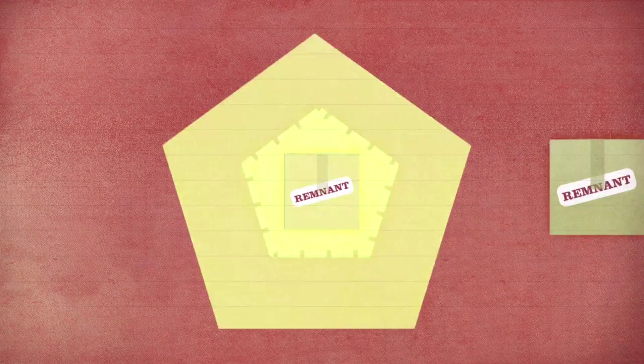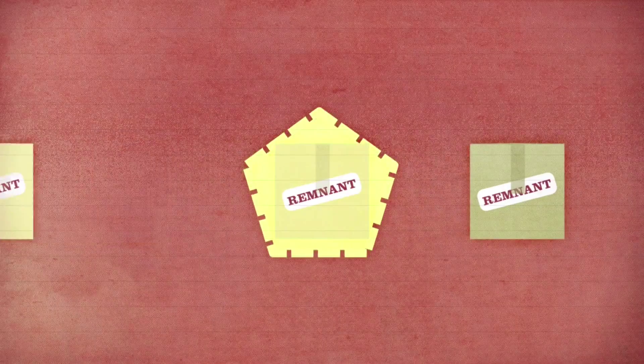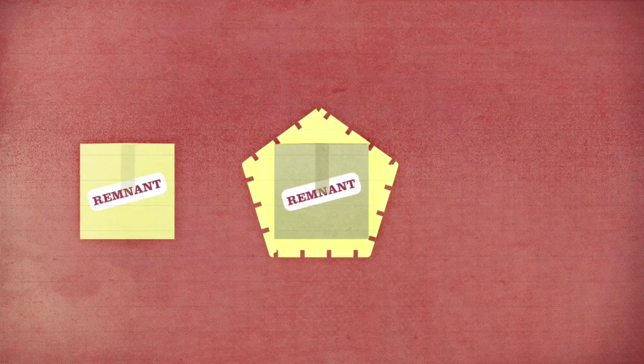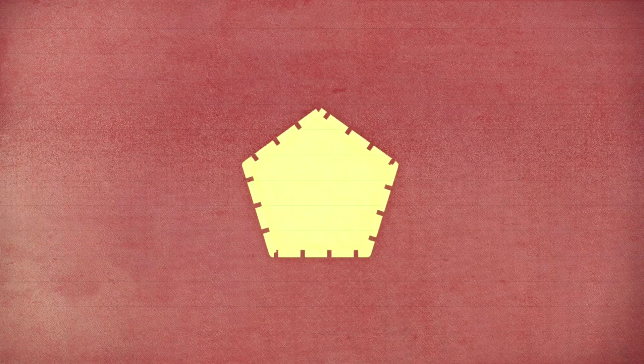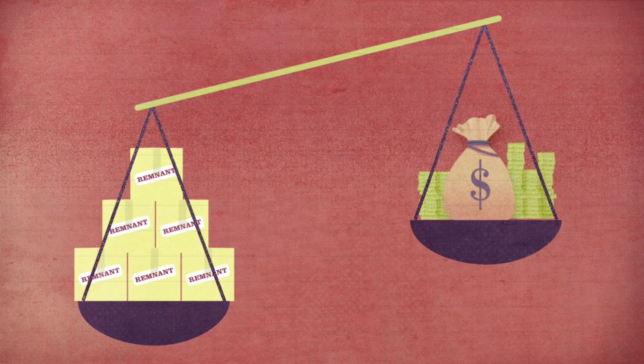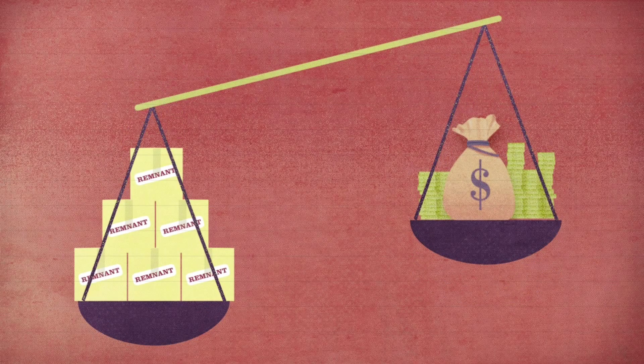So that unsold 70% of publishers' inventory can be traded on an ad exchange to increase the value for both advertisers and publishers. Not only is remnant easier to trade, it is increased in value because of another recent innovation: tracking the data of visitors to those pages.